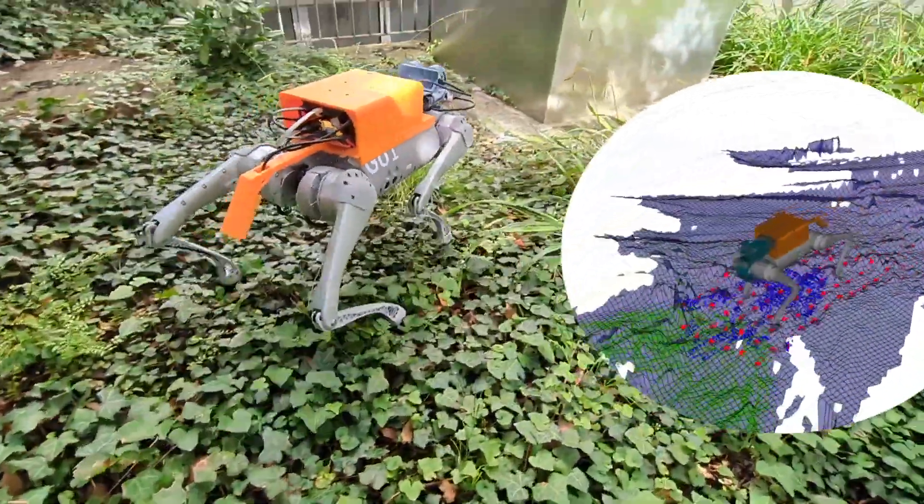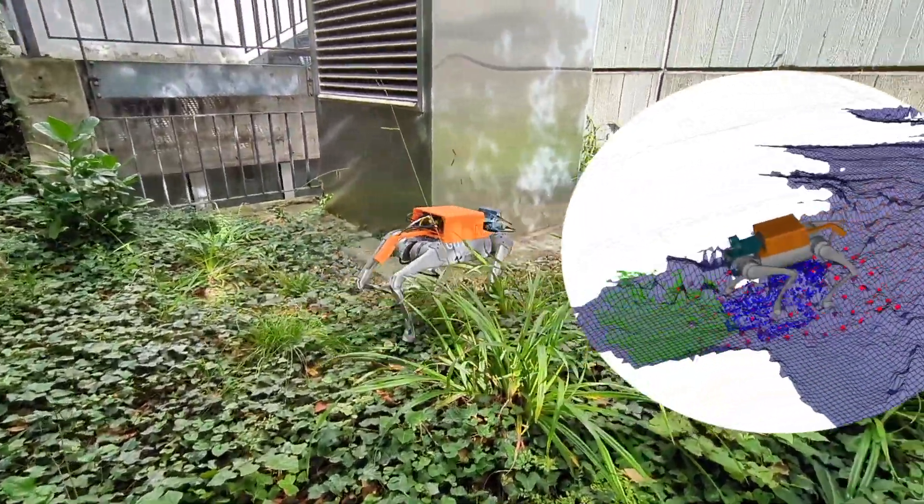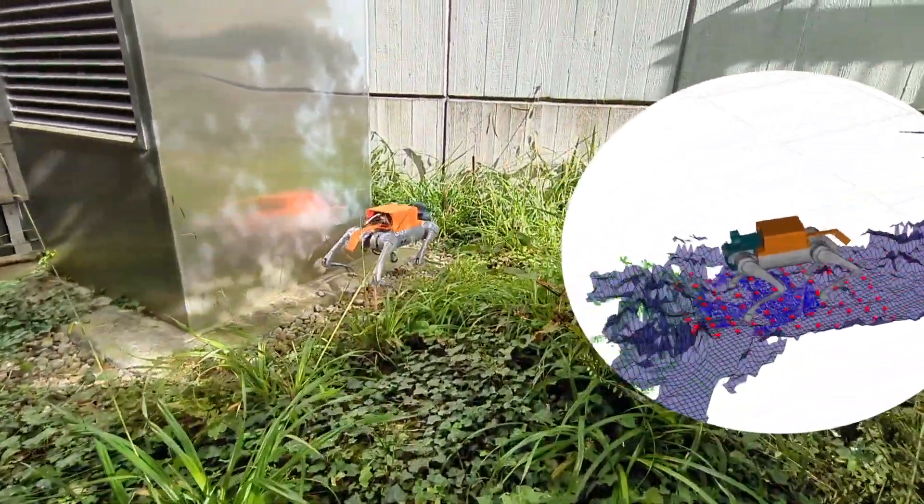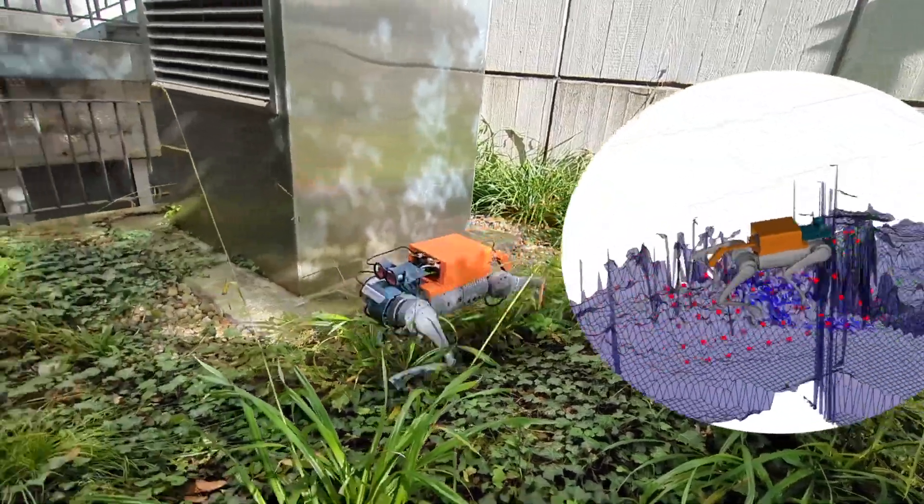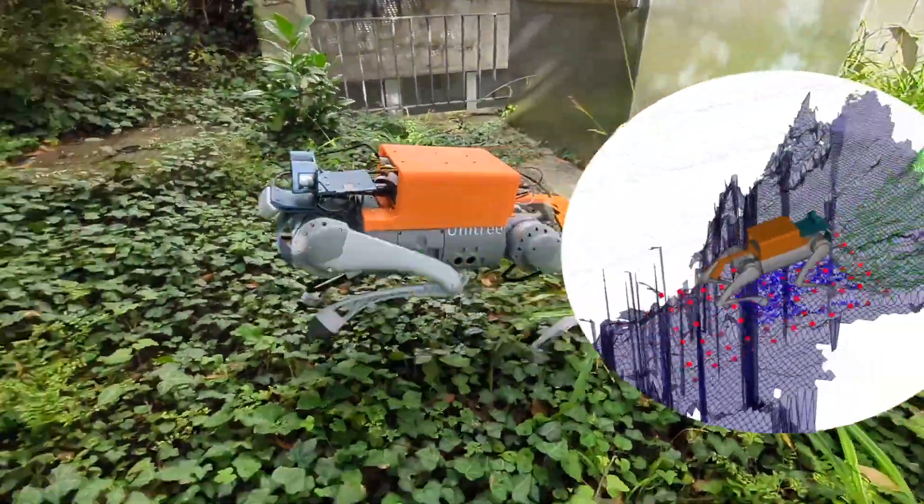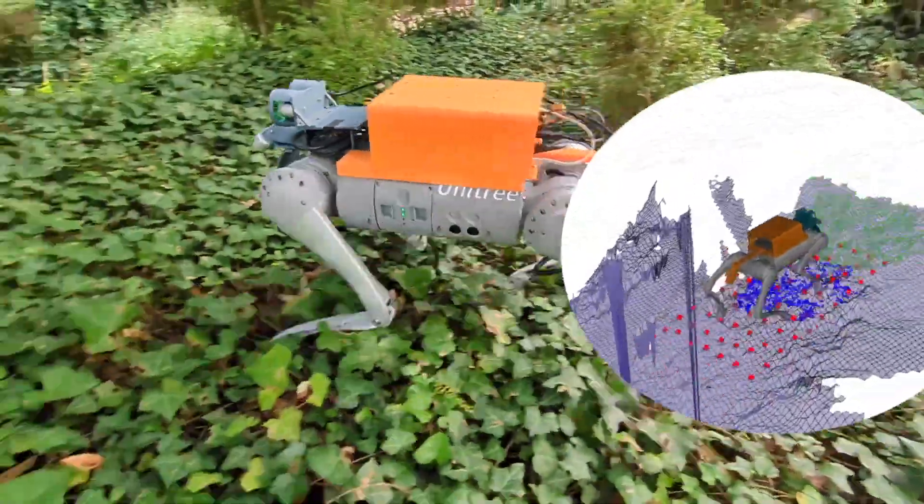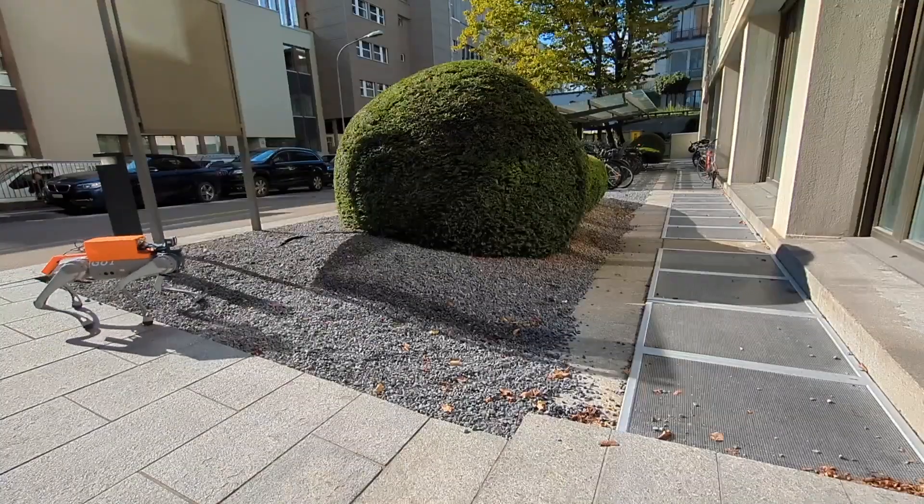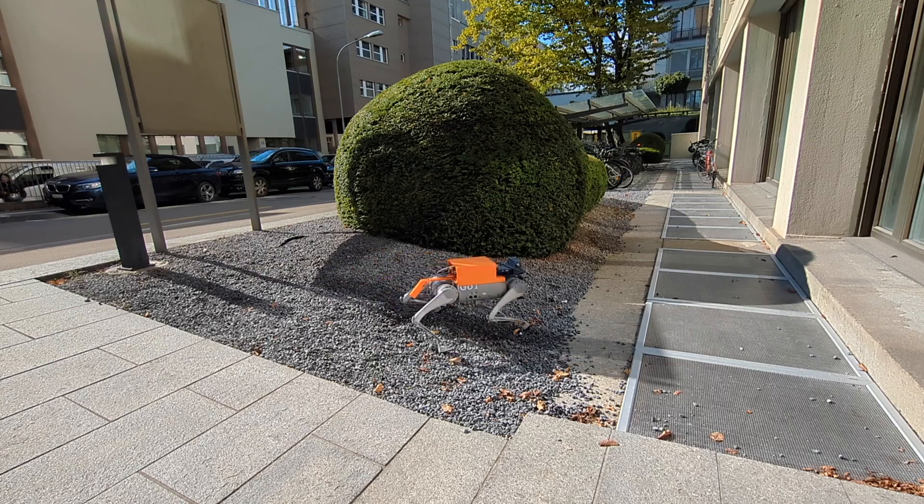Testing on never-before-seen outdoor environments and terrains shows the great robustness and generalization of our proposed sensor setup and reinforcement learning policy. The system reliably navigates challenging terrains including vegetation and gravel, demonstrating its potential for real-world deployment in complex environments.